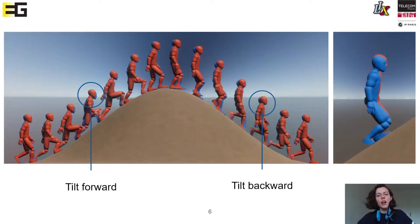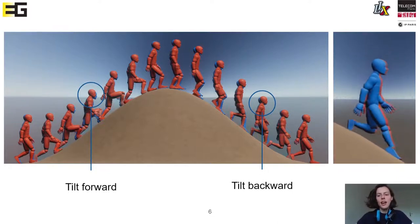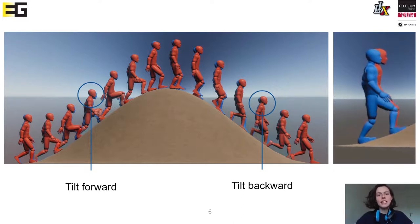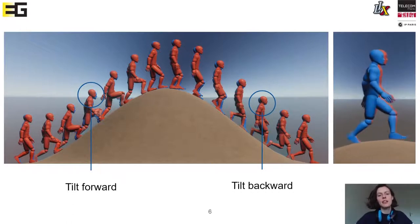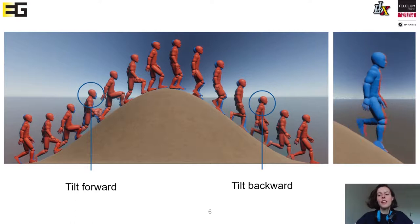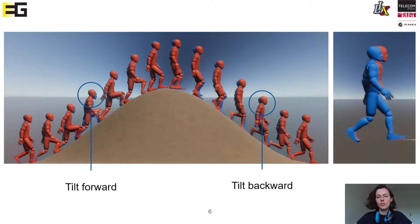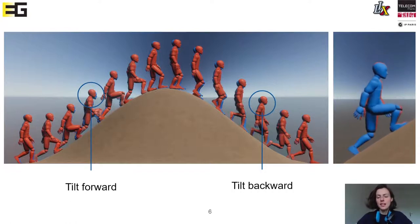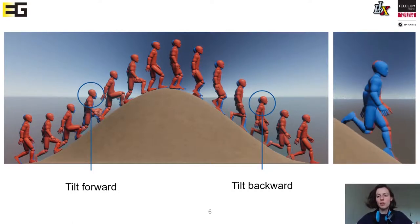Here you can see some results. Both characters have an inverse kinematics system and a preset walking animation. The difference is that the blue character has the torque applied to its rigid body simulation, while the red one hasn't. When climbing up a slope, the blue character tilts more forward than the red one, and when climbing down, it tilts more backwards. The blue character also has a swinging motion that the red character doesn't have, making the gait more natural and adding balance since it always returns to its equilibrium point in the middle of the support polygon.